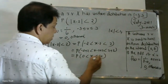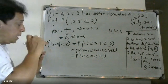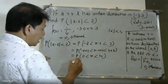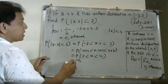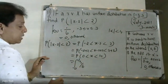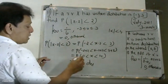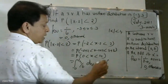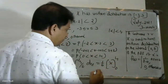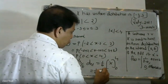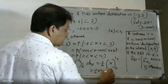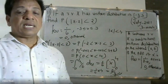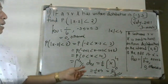So we need the integral from 0 to 4 of f(x) dx. The function value is 1/6, so we get 1/6 multiplied by (4 minus 0), which equals 4/6, giving us 2 by 3.